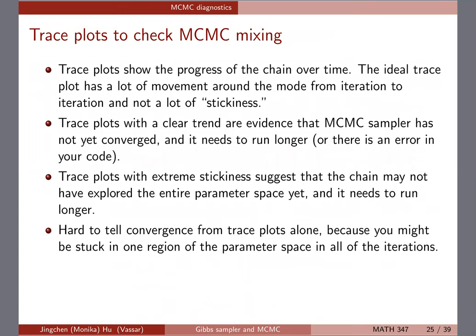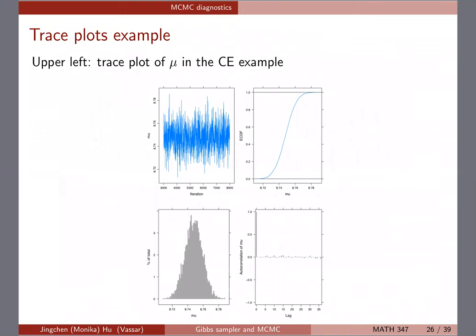We also talked about how to check MCMC mixing using a trace plot. You plot the draws by index and look at how well the chain is mixing. Ideally you don't want the chain to keep going up or keep going down — you want it to explore the space well, going up and down. I showed the example of the trace plot for mu in the Gibbs sampler we ran on the consumer expenditure survey.